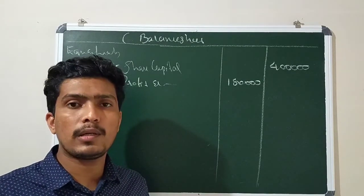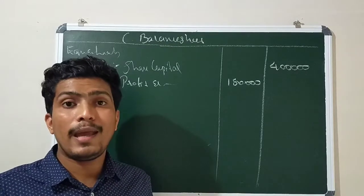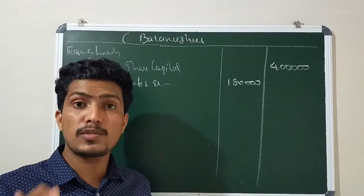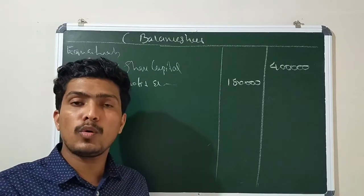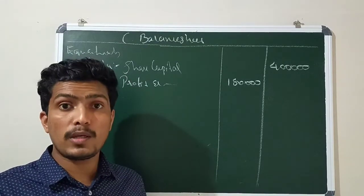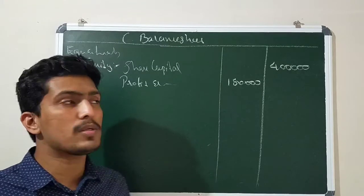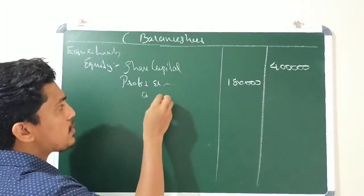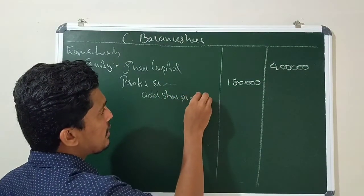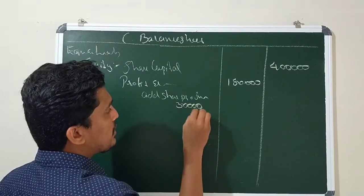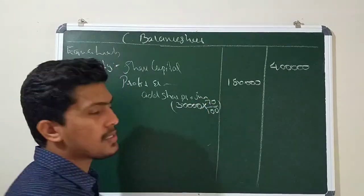We paid 30,000 post-acquisition profit. From the NCI's 30% share of post-acquisition profit, and separately the parent company receives 70% of the post-acquisition profit of 30,000, which is 21,000. So the parent's share of post-acquisition profit is 21,000, added to the consolidated profit and loss figure.